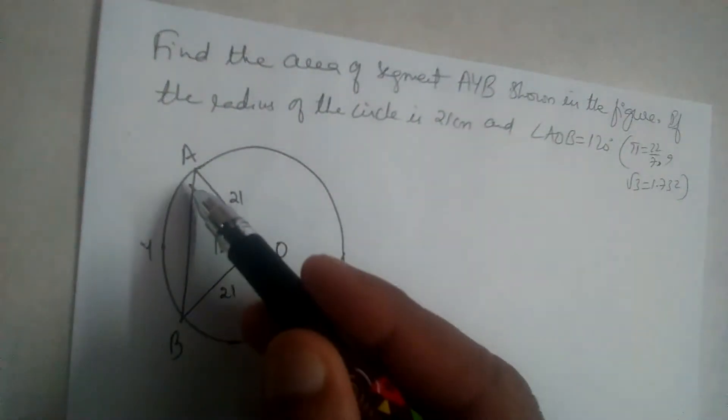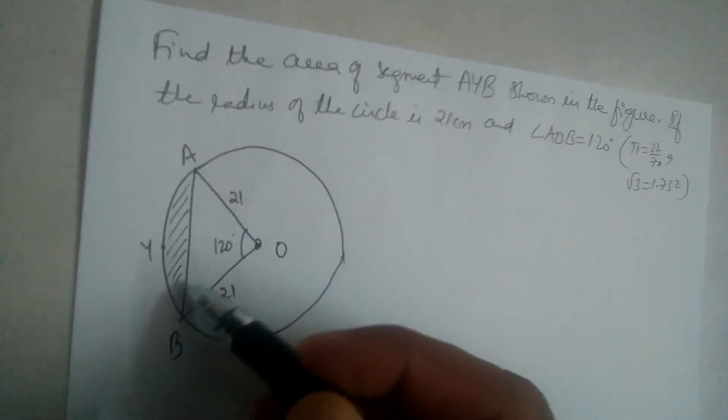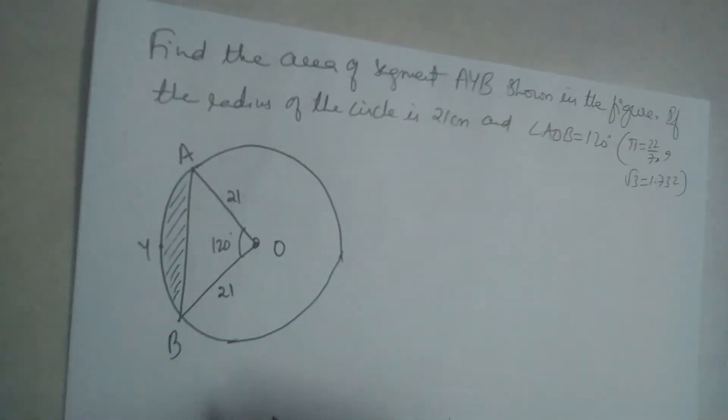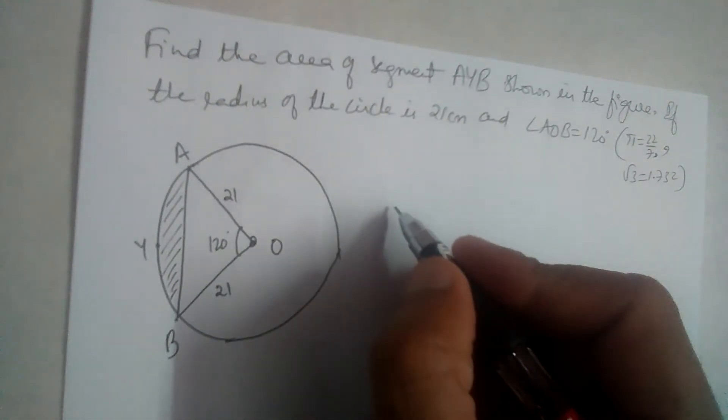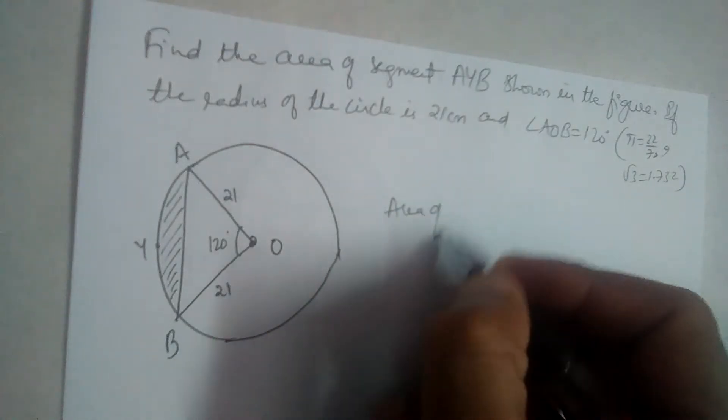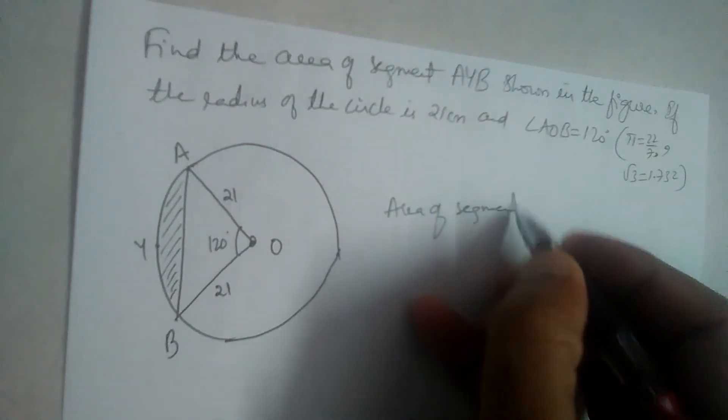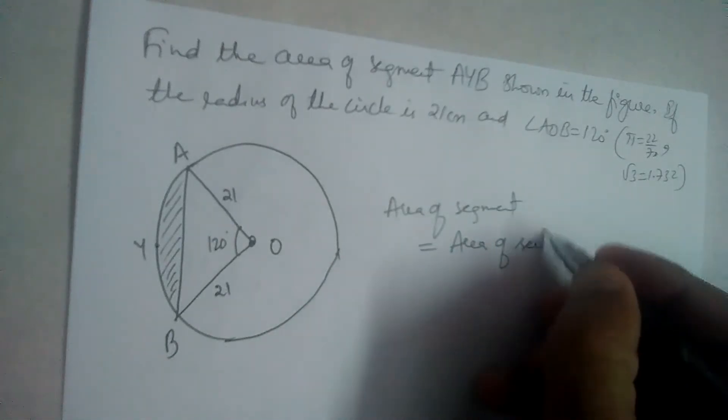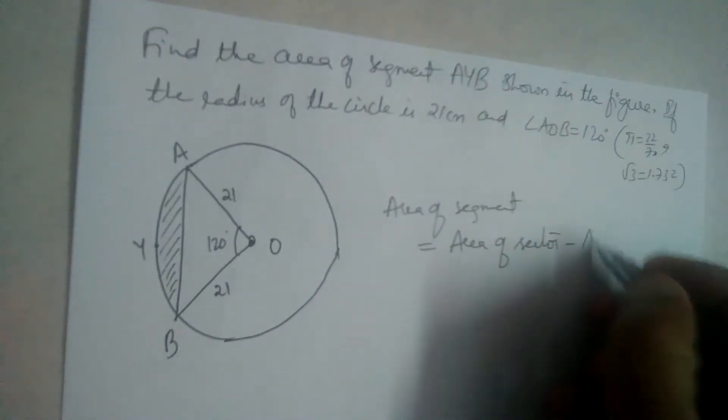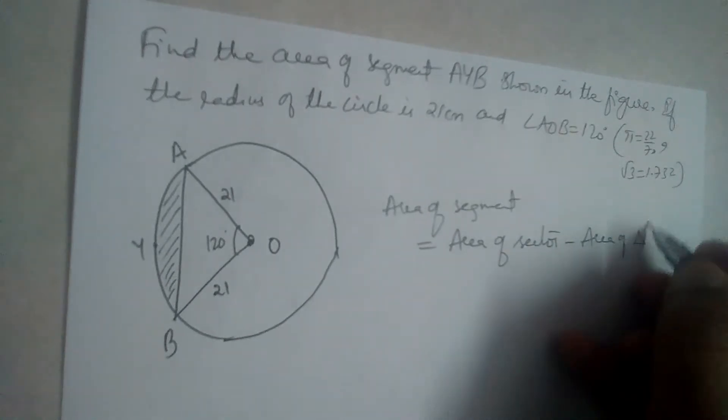We need to find the area of this segment AYB, if the radius is 21. How should we find the area of segment? Area of segment is equal to area of sector minus area of triangle.